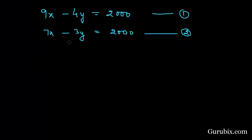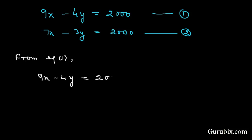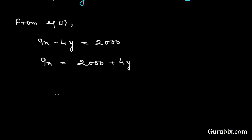Now we shall solve these two equations for x and y using the substitution method. Starting with equation number 1: 9x minus 4y equals 2000. Therefore, 9x equals 2000 plus 4y, which gives us x equals (2000 plus 4y) over 9. This is the value of x in terms of y.